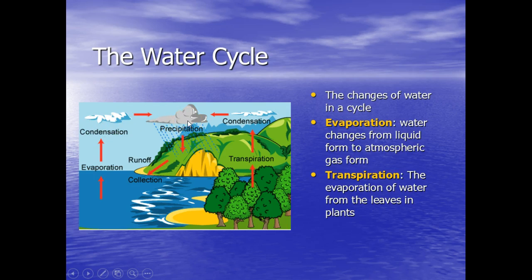There's two different ways of evaporation here. You have the evaporation of water within a water source, and you have transpiration, which is still evaporation, but it's from the leaves in plants.